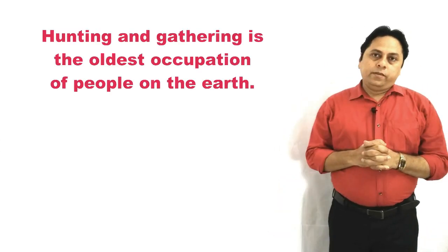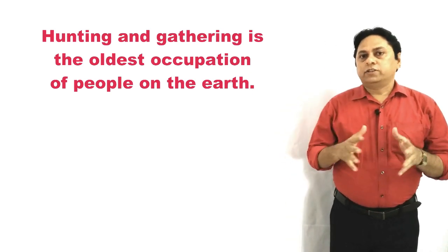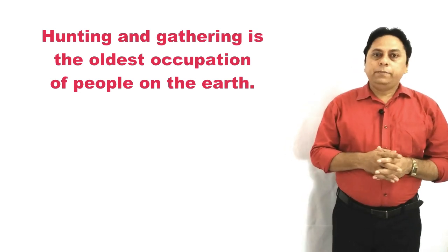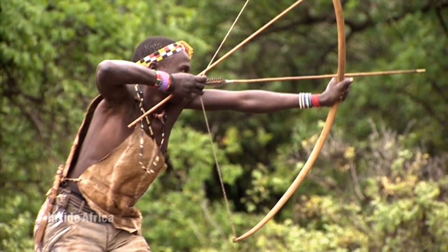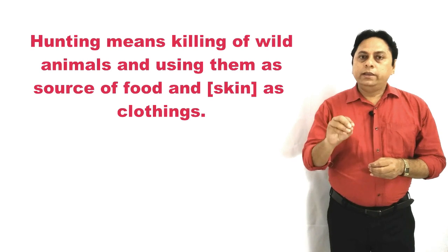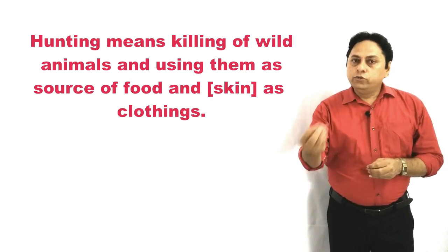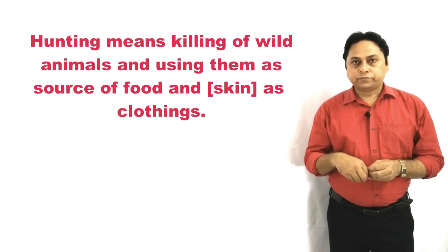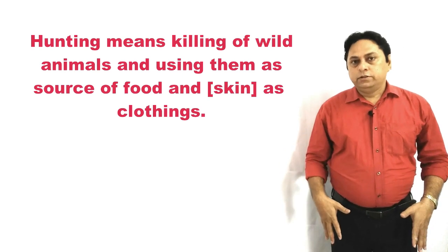Hunting and gathering is the oldest occupation of people on this Earth. Since very ancient times, people were engaged in hunting and gathering. Thousands of years ago there were no other occupations. The only thing people could do was kill animals and collect fruits, roots, nuts, and flowers from the forest to use as food. Hunting means killing especially wild animals in the forest and using them as a source of food, or using them for clothing.